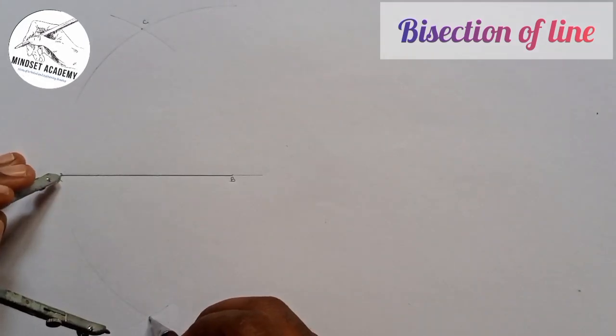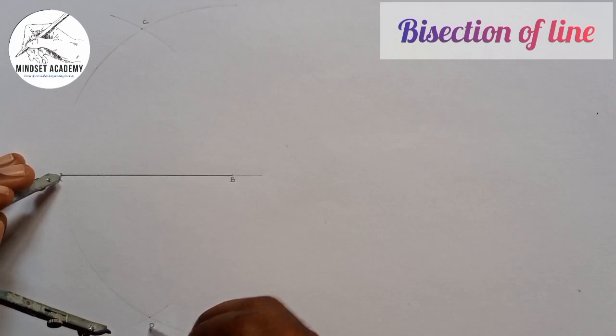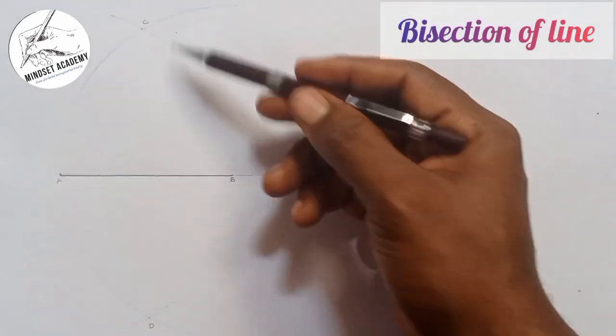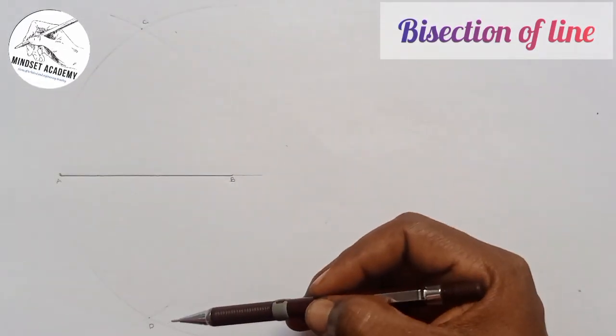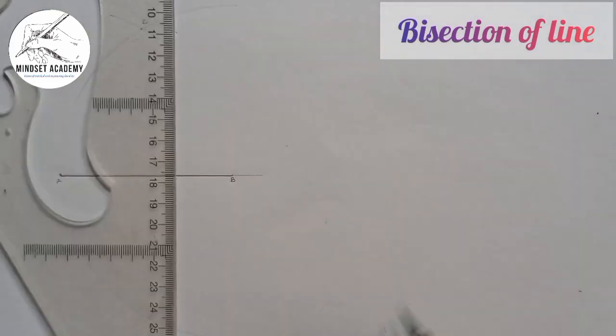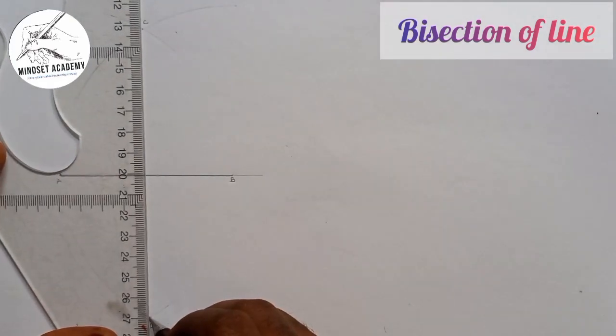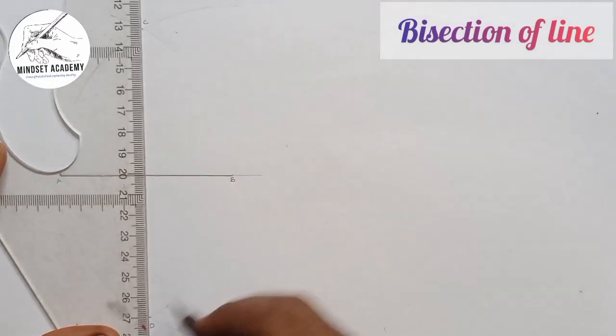Where they cut I'll call it point C. Where they cut below I'll call it point D. Now I will take my metal rule and connect C and D.